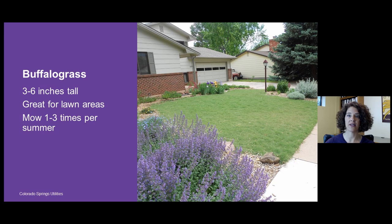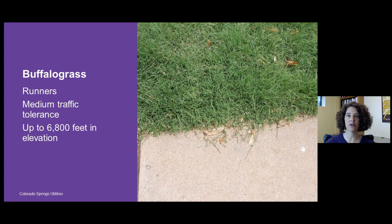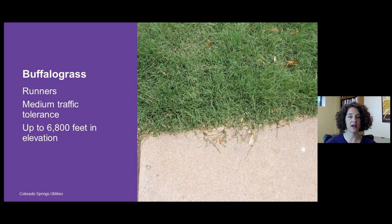Buffalo grass is quite a short grass, growing only three to six inches tall, making it a good option for lawn replacement with significantly reduced mowing — as little as one to three times per summer. It also has runners that spread across the soil surface and can fill in any bare areas, so it can be used in medium traffic areas.